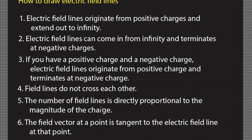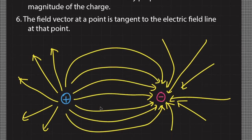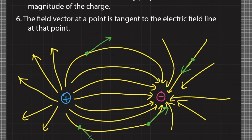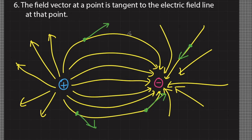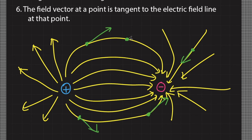Finally, the last rule: the field vector at a point is tangent to the electric field line at that point. For example, if you want to draw the field vector at a given point, that field vector should be tangent to the electric field line at that point. Whatever point you choose, the electric field vector is tangent to the electric field line.